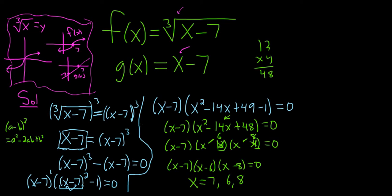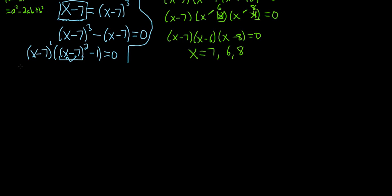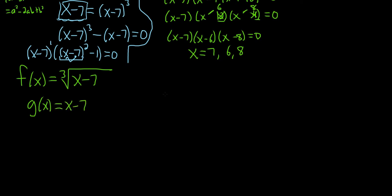Now we can attempt to draw the graph correctly. Let me write down the functions again: f of x equals the cube root of x minus 7, and g of x equals x minus 7. Here's the y-axis and x-axis. We know we have intersection points: 7 is really important — both the cube root function and g pass through there. Then we also have 6 and 8 labeled.